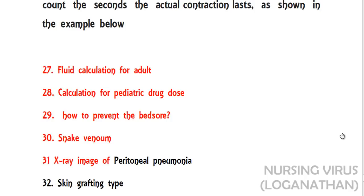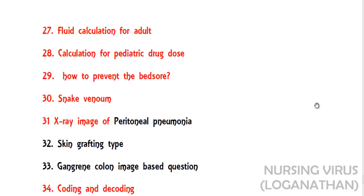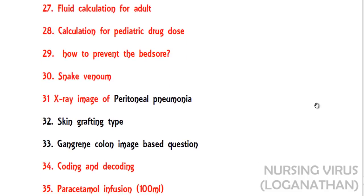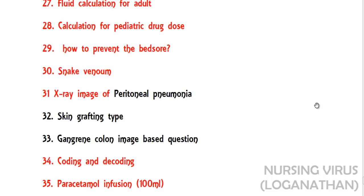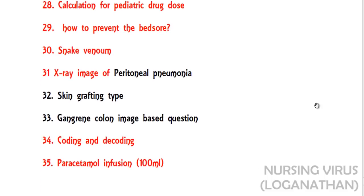The twenty-ninth question was a negative question about how to prevent bed sores. The thirtieth question was about snake venom. The thirty-first question gave an X-ray image — the correct answer is perineal pneumonia. There was also an image-based question on the type of skin graft, and the thirty-third question showed a gangrene colon image asking which type of gangrene it represents. Two questions were from coding and decoding.